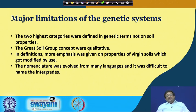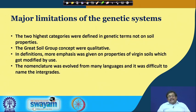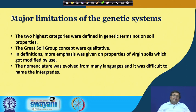The major limitations of the genetic systems: the two highest categories were defined in genetic terms, not on soil properties; the great soil group concept was qualitative, not quantitative; more emphasis was given to properties of virgin soil which got modified by use; and the nomenclature evolved from many languages, making it very difficult to name the integrades. These inherent problems created a pressing need for a more scientific and comprehensive system of soil classification.